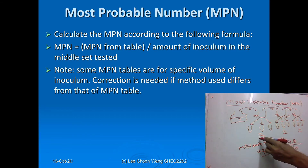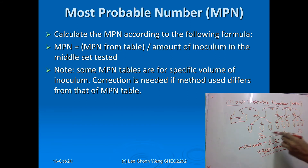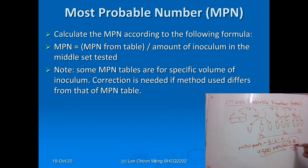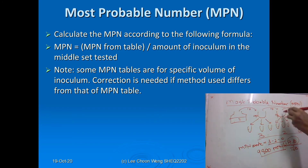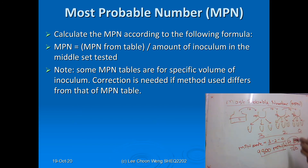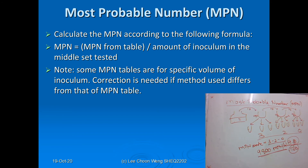Once you obtain your MPN code, you refer to the MPN table. From the table you obtain the amount of inoculum in the middle set, and that gives you your final MPN per ml.